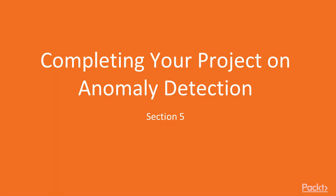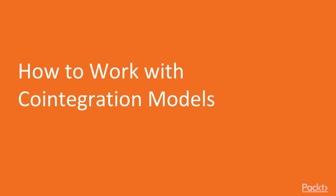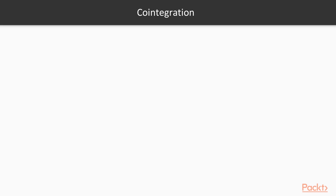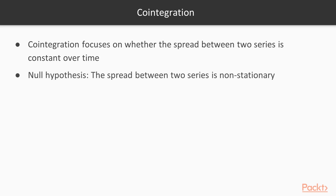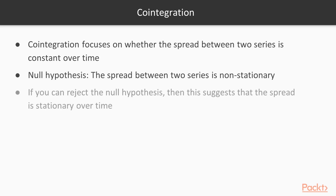Hello, everybody. Welcome to the section on completing your project on anomaly detection. In this video, we'll take a look at how to work with cointegration models. We've already taken a look at time series to determine whether it was stationary or not. For cointegration, the focus is on whether the spread between two series is constant over time. The null hypothesis states that the spread between two series is non-stationary. If you can reject that null hypothesis, then this suggests that the spread is indeed stationary over time, hence it is cointegrated.